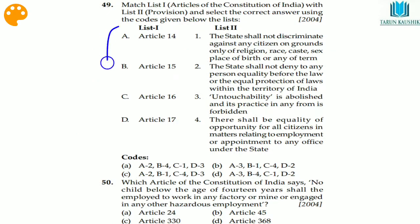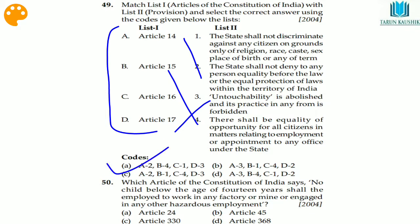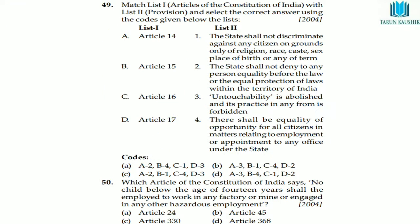Question 49: a list of articles and provisions is given. Article 17 deals with untouchability. Article 15 is right to equality — the state shall not discriminate against any citizen based on religion, race, caste, sex, or place of birth. The correct matching is: A to 2, B to 4, C to 1, and D to 3.